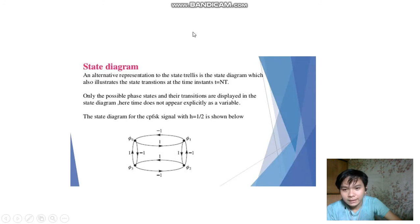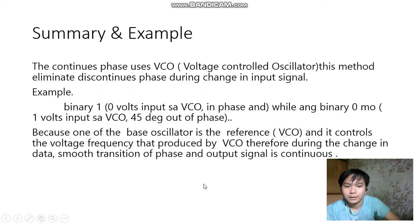Summary and example: The continuous phase uses VCO (Voltage Controlled Oscillator). This method eliminates the discontinuous phase during the change in input signal.